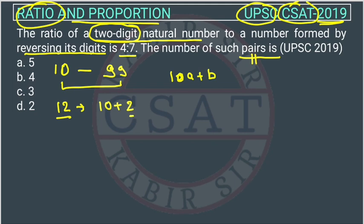This is the unit digit, this is the tens digit. Suppose the number is 22, so it will become 10 times 2 plus 2. That's why we assume the number in this form. So this is a number 10a plus b.